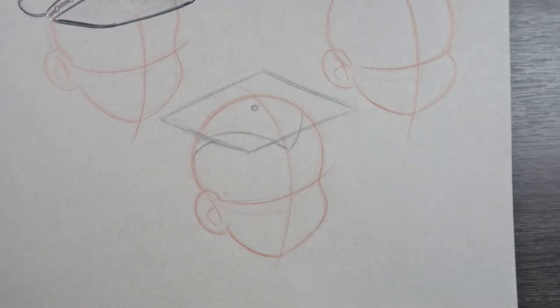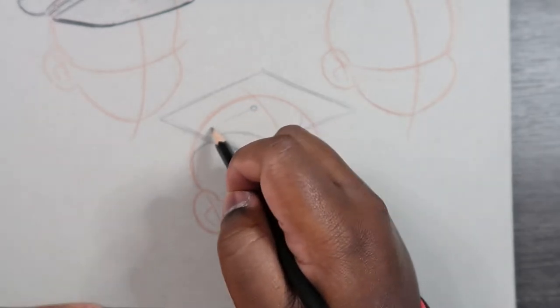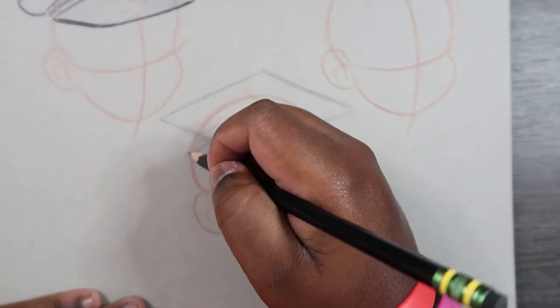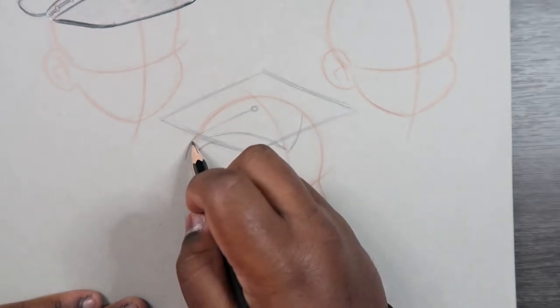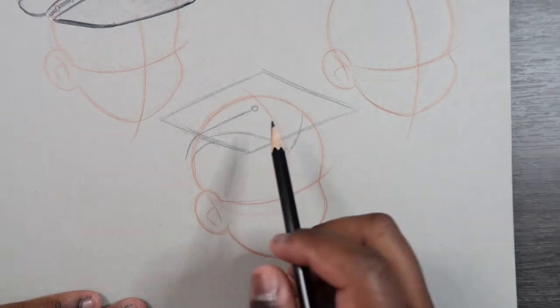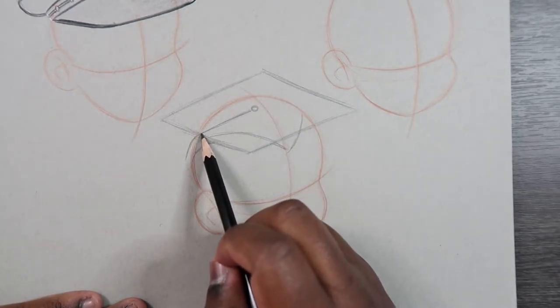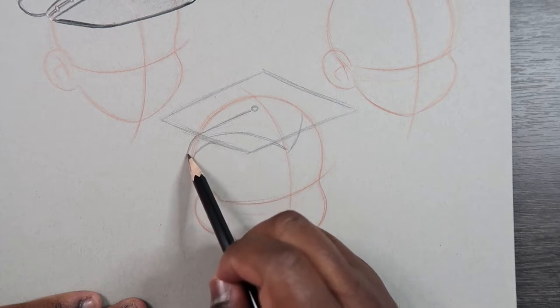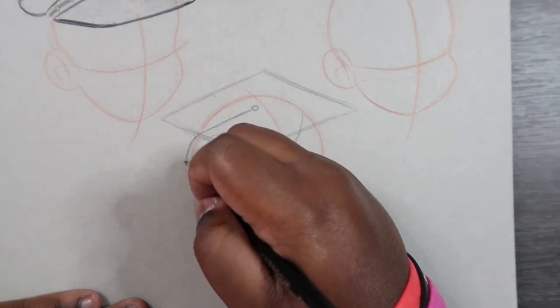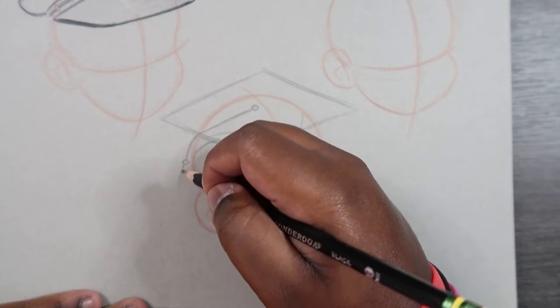And now we can draw the tassel that hangs from here. So I'm going to draw like a little string that kind of falls off of the hat. So we're going to make like a waterfall line. The reason I call it a waterfall line is that when you're on the graduation cap, you draw a string and then it makes like a little curve that looks like water on a waterfall. That's why I call it that.